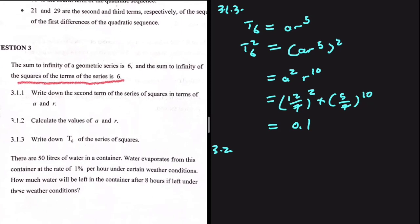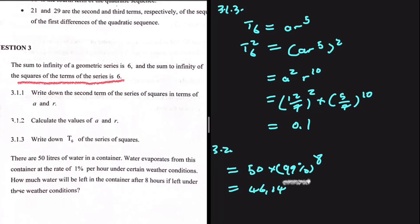For 3.2: there are 50 liters of water in a container, and water evaporates at a rate of 1% per hour. The amount of water left after 8 hours equals 50 multiplied by 99% to the power of 8, which equals 46.14 liters. Each hour we retain 99% of the water, and after 8 hours we are left with 46.14 liters.